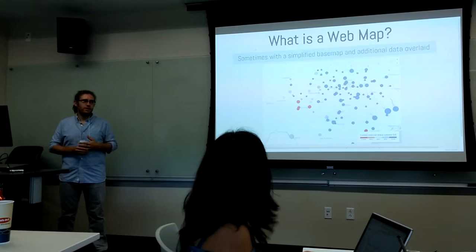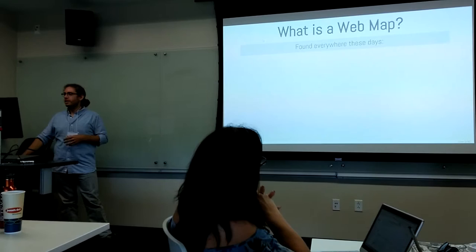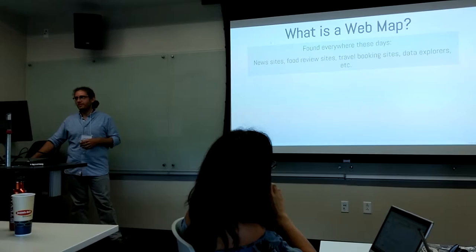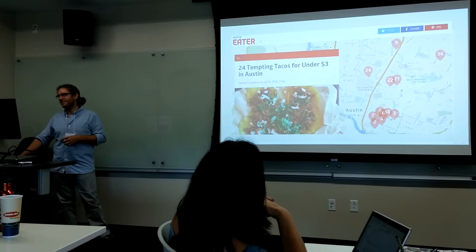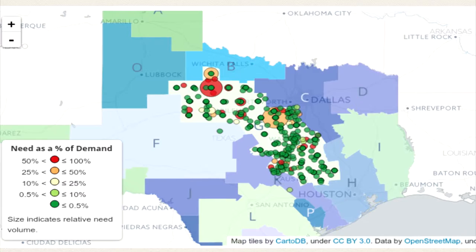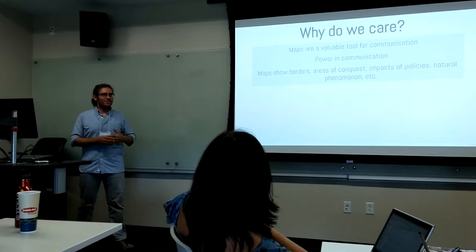You've probably seen a lot of maps. The New York Times is really big into showing data on maps, and NPR also does a lot of news reports with maps. Maps are found everywhere — news sites, food review sites, travel sites, data explorers. There's Yelp, Airbnb, Eater — that's an article for finding good tacos in town. And this is an app that Andy and I made at our jobs that shows state water planning data in a map interface.